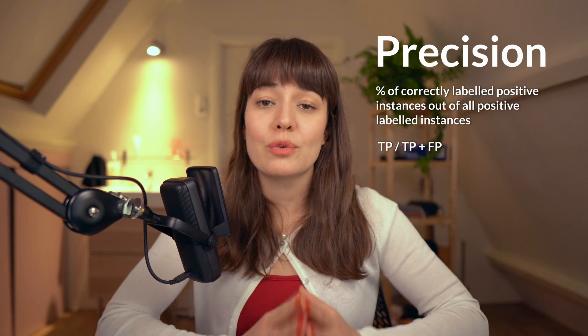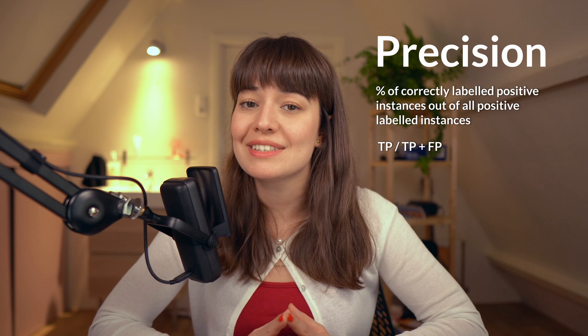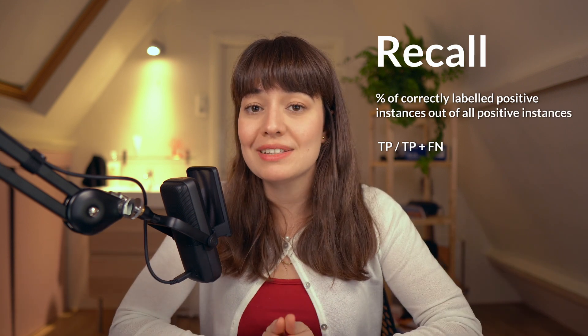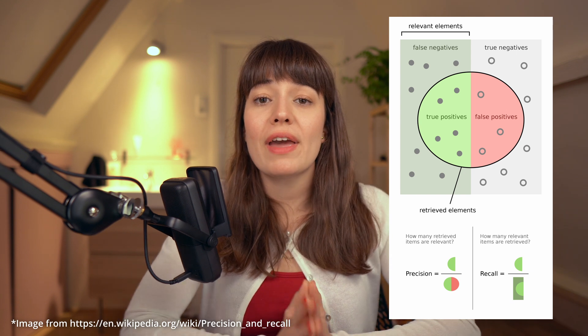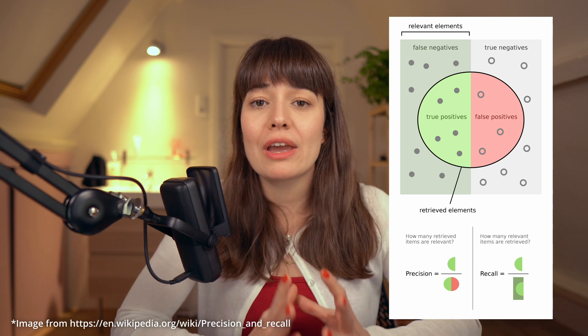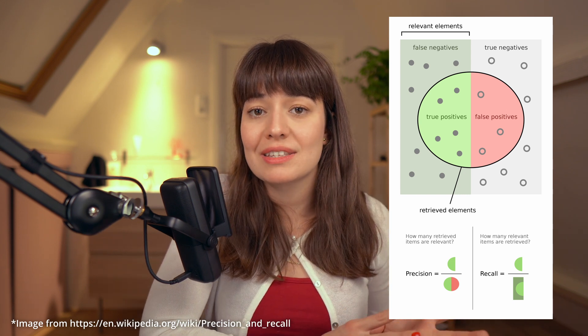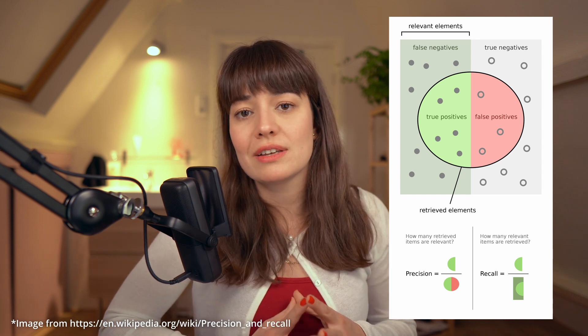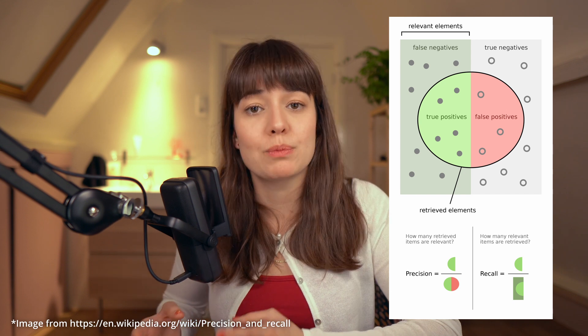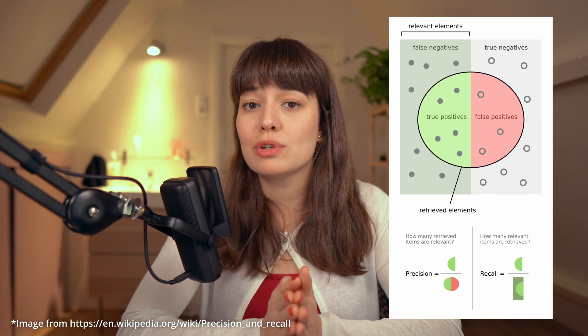Let's first define precision and recall assuming we're doing a binary classification task. Precision is the percentage of correctly labeled positive instances out of all the instances that were labeled as positive. Whereas recall is the percentage of correctly labeled positive instances out of all the instances that are actually positive. So basically, precision tells us: out of everything that I labeled as positive, how many of them were actually belonging to that class? Whereas recall tells us: out of everything that was positive, how many of them was I able to capture?